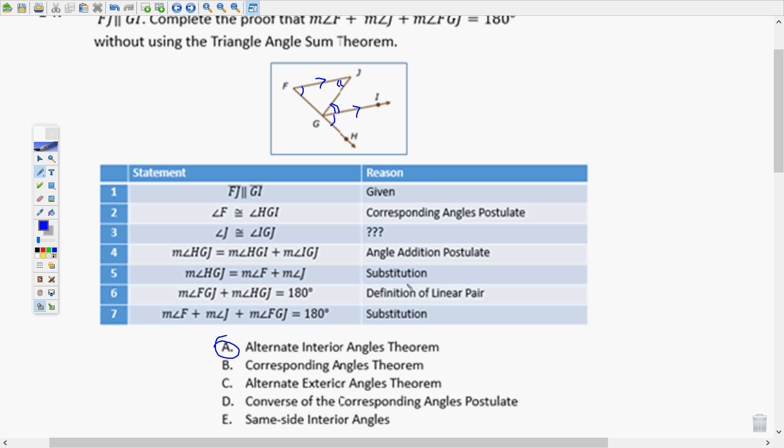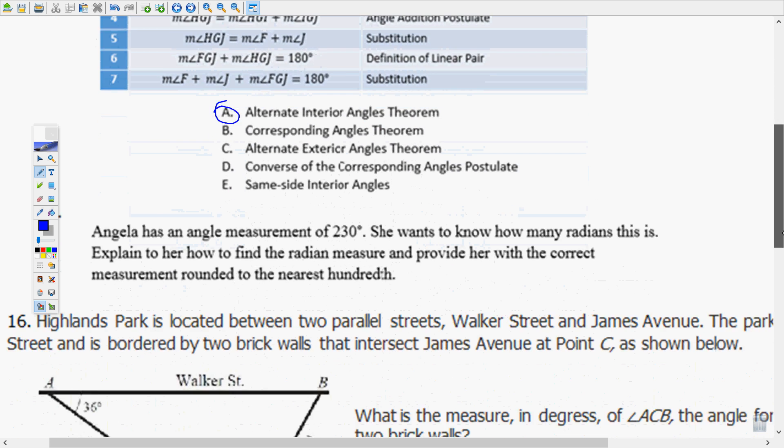And then it goes on to prove, but all we had to do here was say why those two angles are congruent. This might be a drag and drop situation on your test. So you would just take the alternate interior angles theorem, cover it over the reason for number three, and when it turns a darker color, that's when you can drop it. You want to practice that.